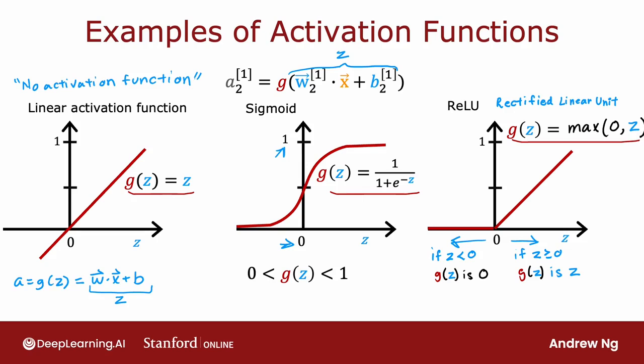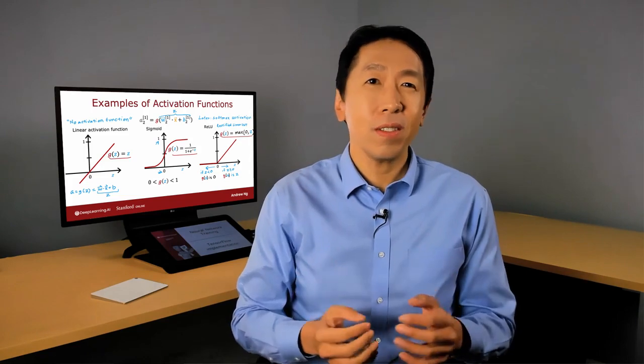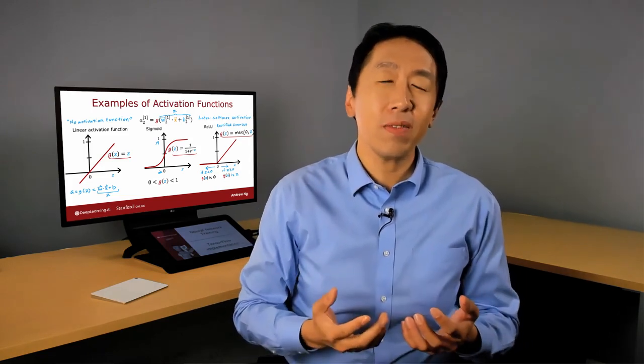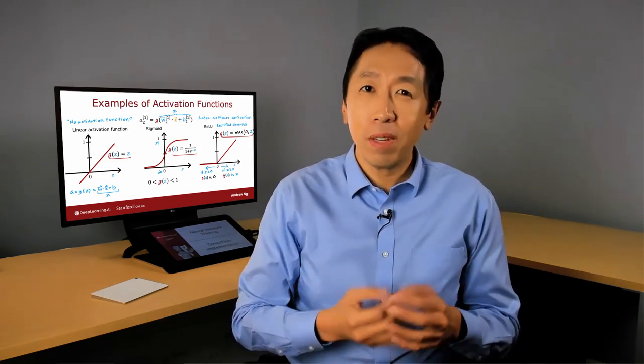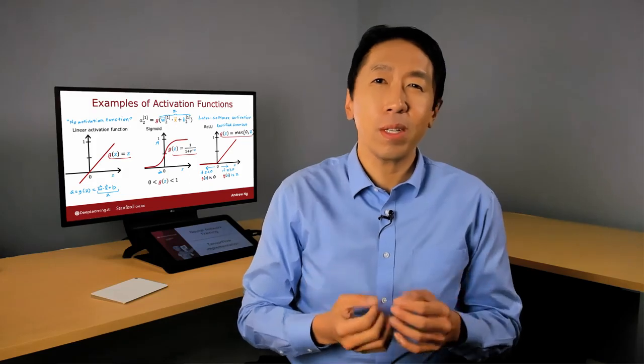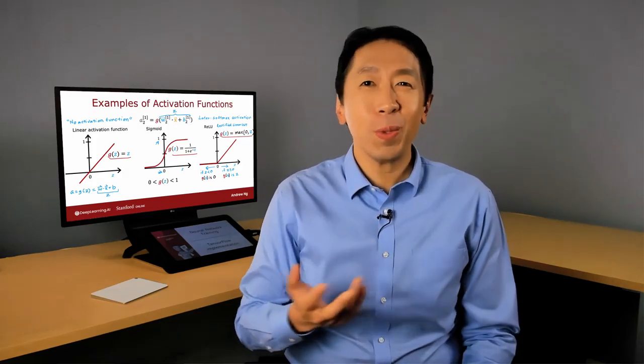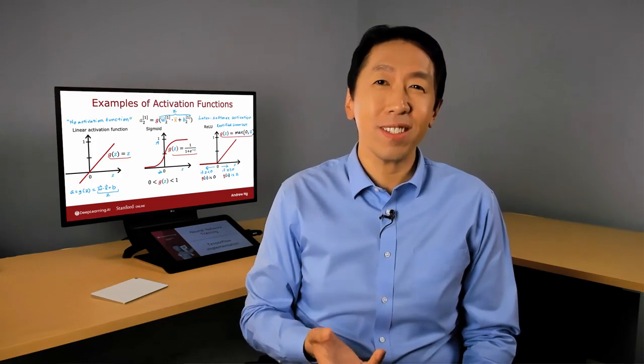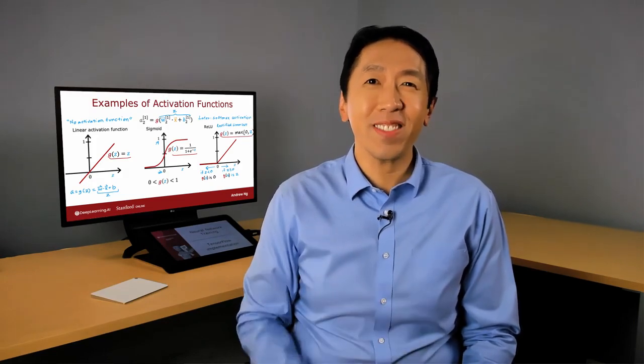Later this week, we'll touch on the fourth one called the softmax activation function. But with these activation functions, you'll be able to build a rich variety of powerful neural networks. So when building a neural network, for each neuron, do you want to use the sigmoid activation function or the ReLU activation function or a linear activation function? How do you choose between these different activation functions? Let's take a look at that in the next video.